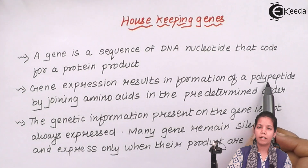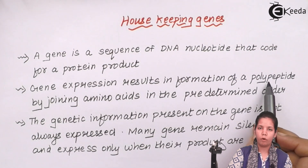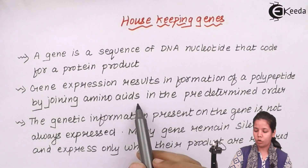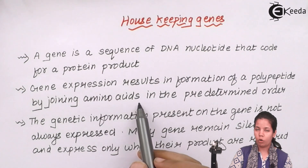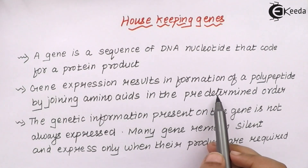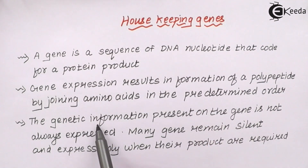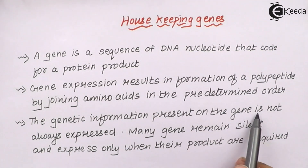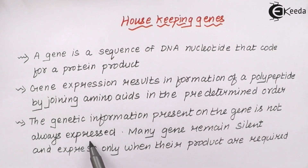When I say polypeptide, different amino acids join together to form an amide linkage, forming a polypeptide, and further they form a protein molecule. Amino acids always join in a predetermined order or particular sequence for the protein to be formed. The genetic information present on the gene is not always expressed.